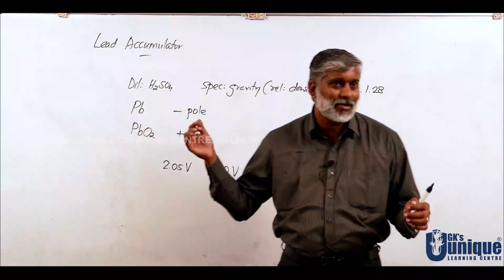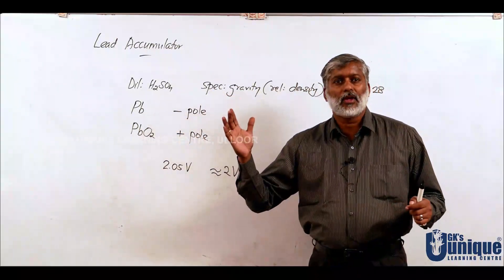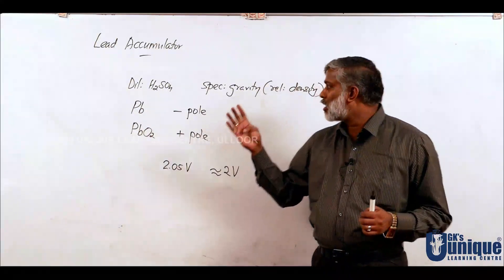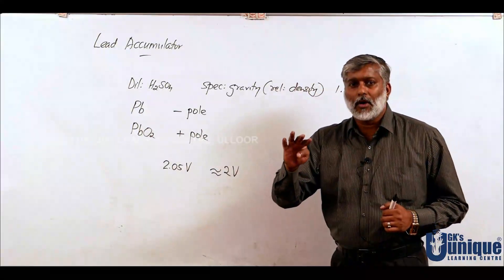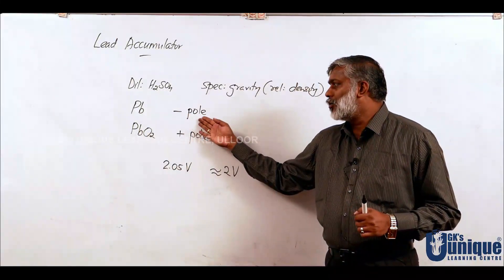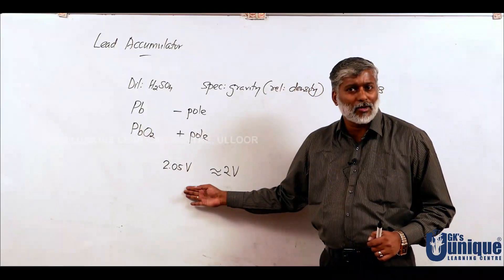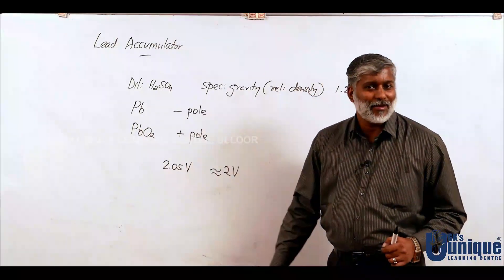Am I right? So once again, in Lead Accumulator, Dilute Sulfuric Acid is electrolyte. Its specific gravity or relative density is between 1.2 and 1.28. Then Lead is the negative pole. Thank you.